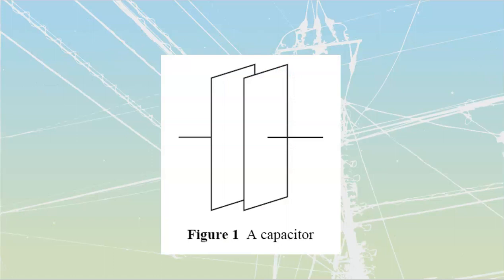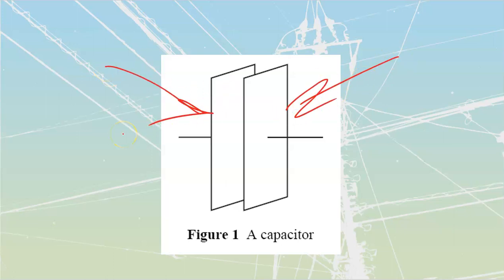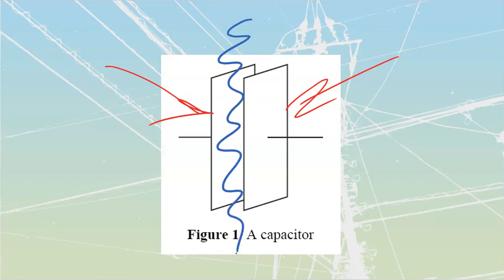A capacitor is a component expressly made to store electric energy in the field — specifically in the distortion of the field between its plates and in the distortion of the atoms within its dielectric. Capacitors are always made up of two parallel plates separated by a dielectric, which is any type of insulator: air, glass, ceramic, chemical buildups, oxides. The plates themselves cannot be touching — if the plates touch, it's a conductor, not a capacitor.